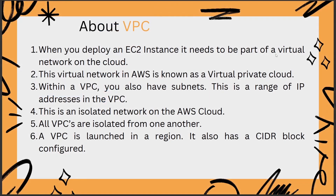Let's focus on some important terminology around the AWS services that we'll be using in this video. Starting off with the AWS VPC, which is the Virtual Private Cloud. When you deploy an EC2 instance, it needs to be part of a virtual network on the cloud. This virtual network in AWS is known as a Virtual Private Cloud.